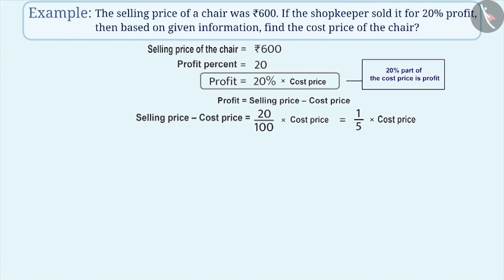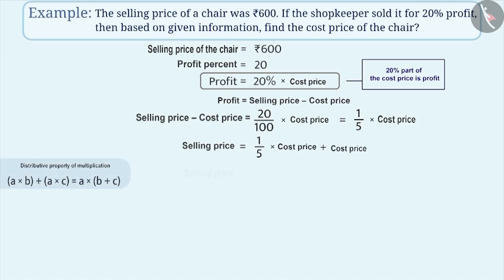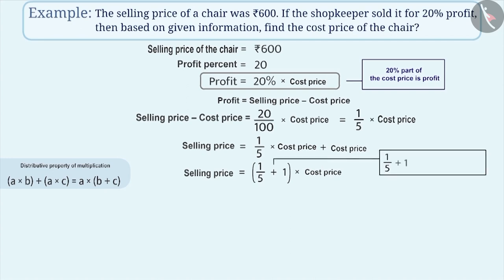We can rearrange this and write it as: selling price = (1/5) × cost price + cost price. Using the distributive property of multiplication, if we write cost price outside the bracket, then inside the bracket we get 1/5 + 1. Since 1/5 + 1 = 1/5 + 5/5 = 6/5, selling price = (6/5) × cost price.